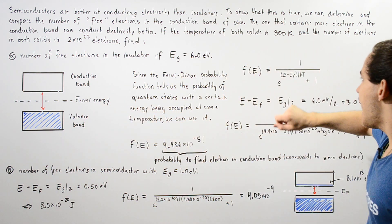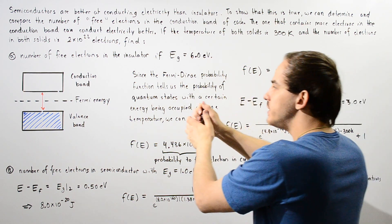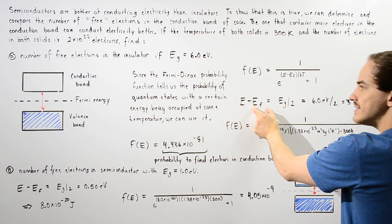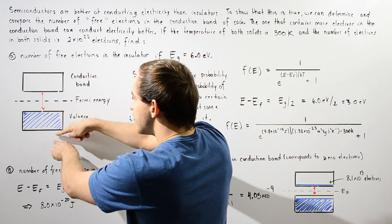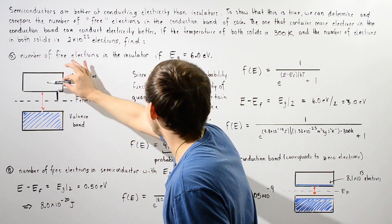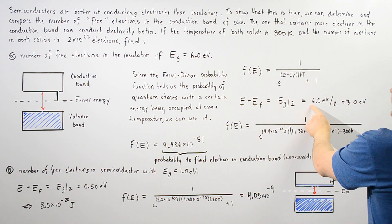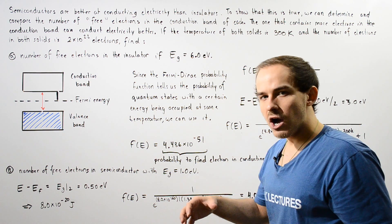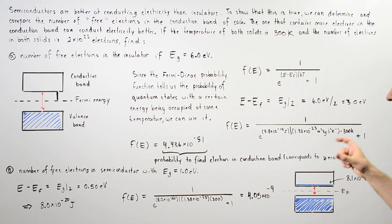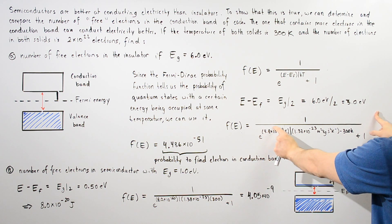To calculate E minus E_f, we take the difference between the energy at the conduction band and the Fermi energy, which equals half the gap energy. So E minus E_f equals the gap energy divided by 2. This quantity appearing in the exponent of the exponential function is simply 6 eV divided by 2, which equals 3 eV. Converting to joules by multiplying by 1.6×10⁻¹⁹, we get 4.8×10⁻¹⁹ joules.